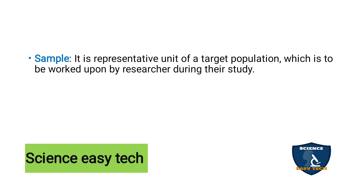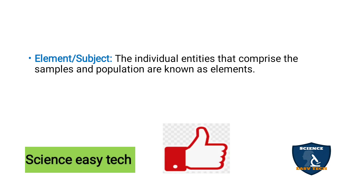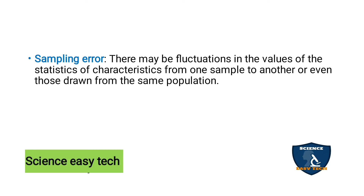Sample is the subset of the target population — it is a representative unit of the target population which is to be worked upon by the researcher during the study. Through the sampling process, you select samples; maybe 100, 500, 1000, 700, 300, or even 30 depending on the study. Element or subject means the participants — each participant is considered to be a subject or element. The individual entities that comprise the samples and population are known as elements or subjects. Sampling error refers to fluctuations in the values of statistics from one sample to another, even those drawn from the same population. Even when carefully selecting samples, there may be chances for some error to occur, which you can deal with through statistical analysis.